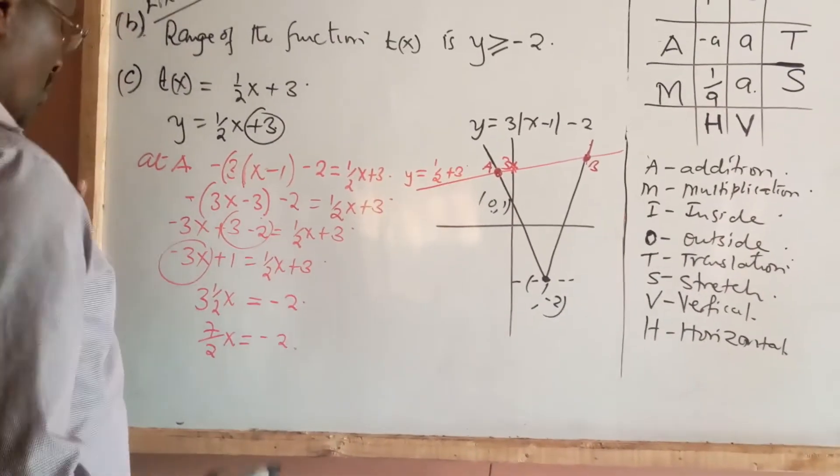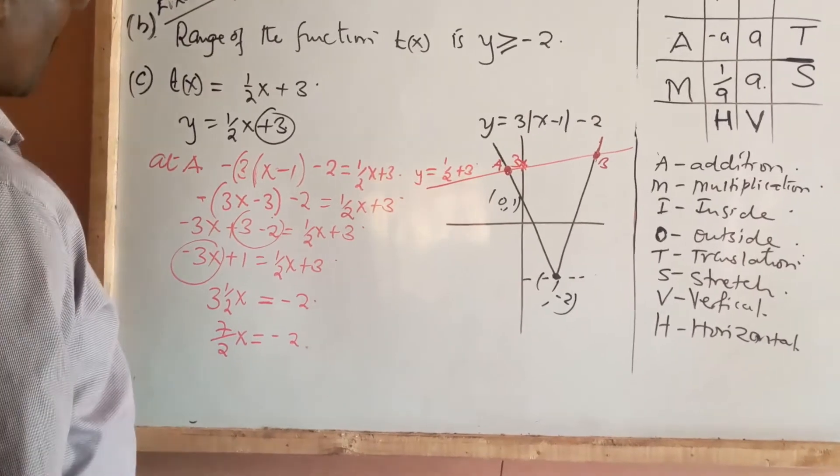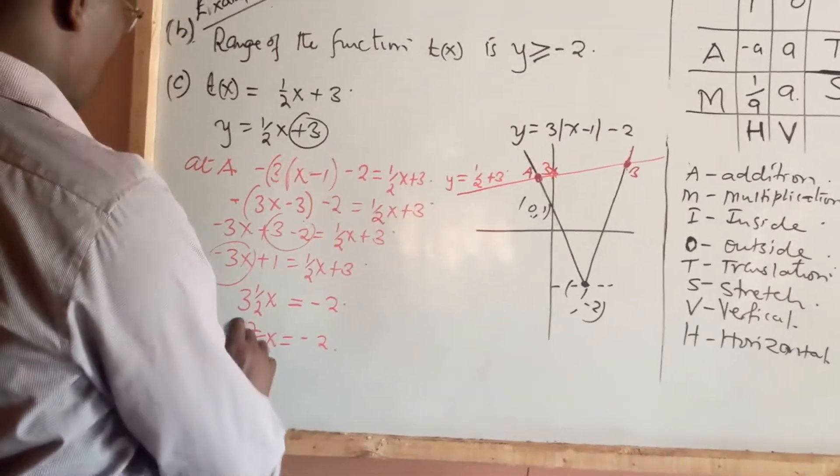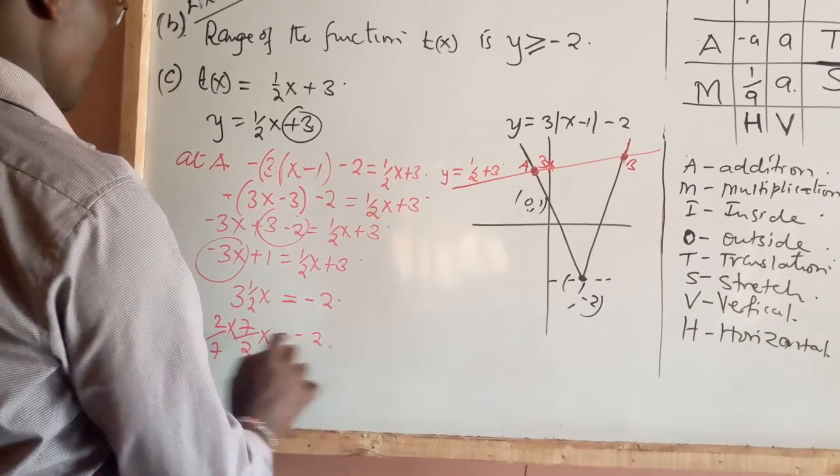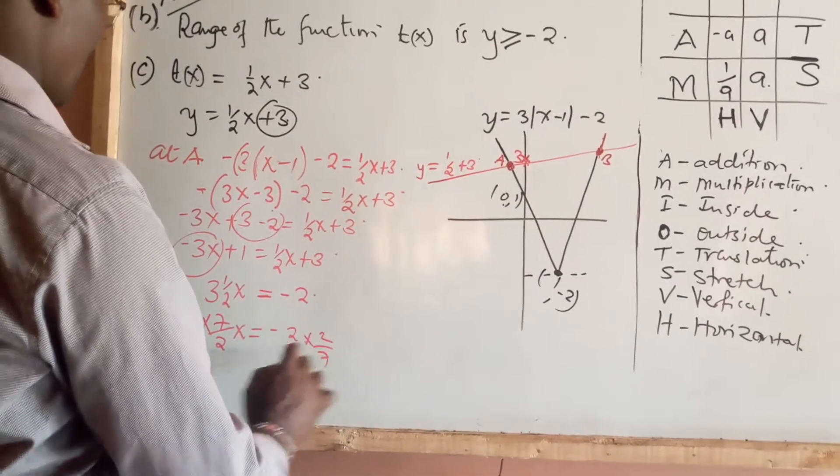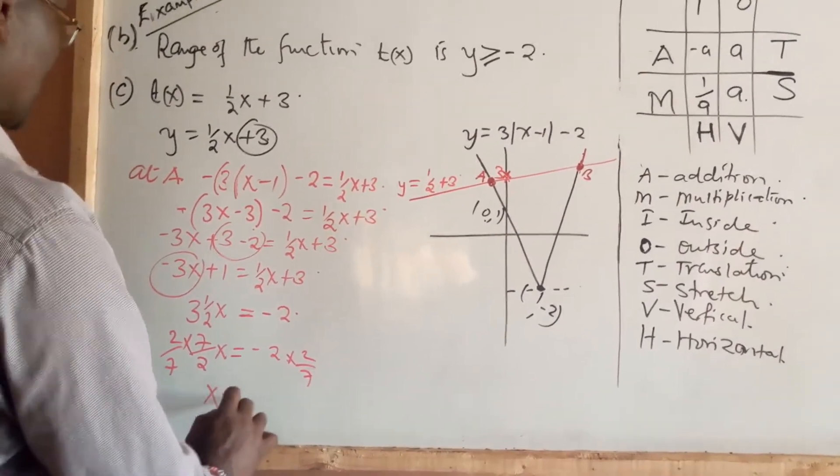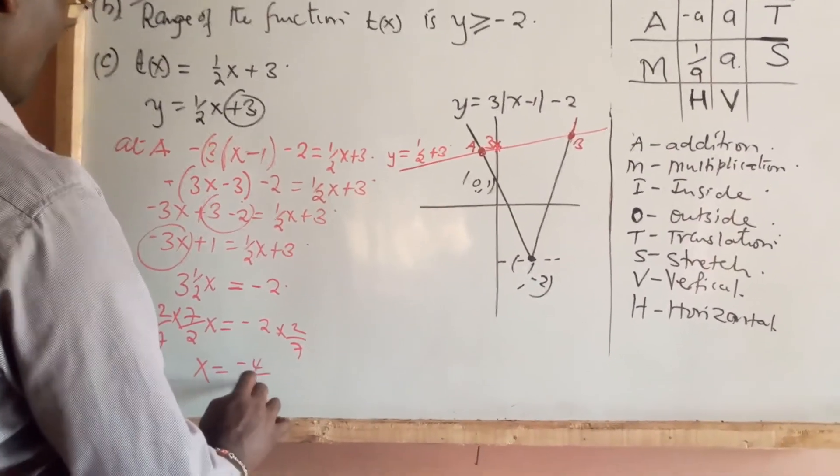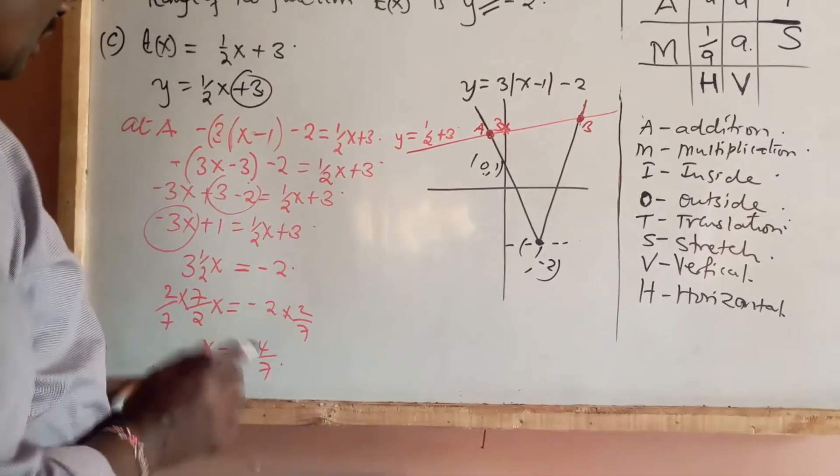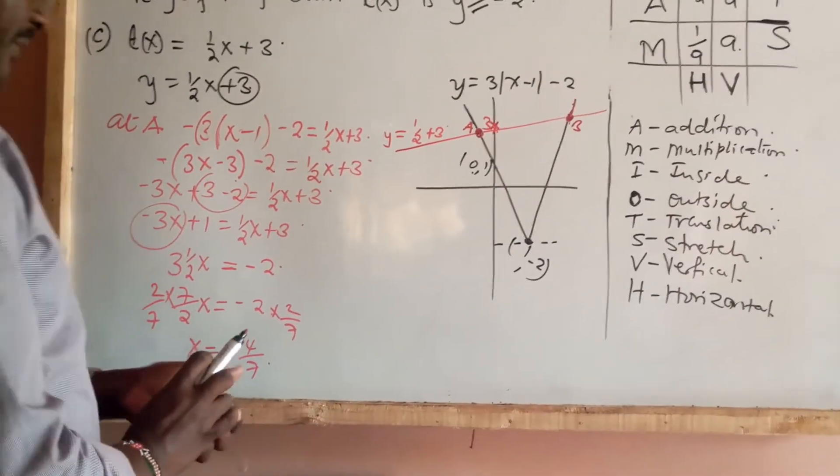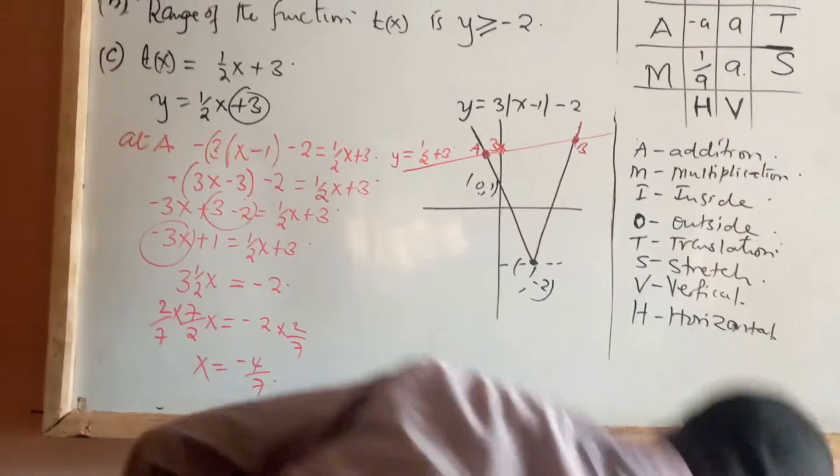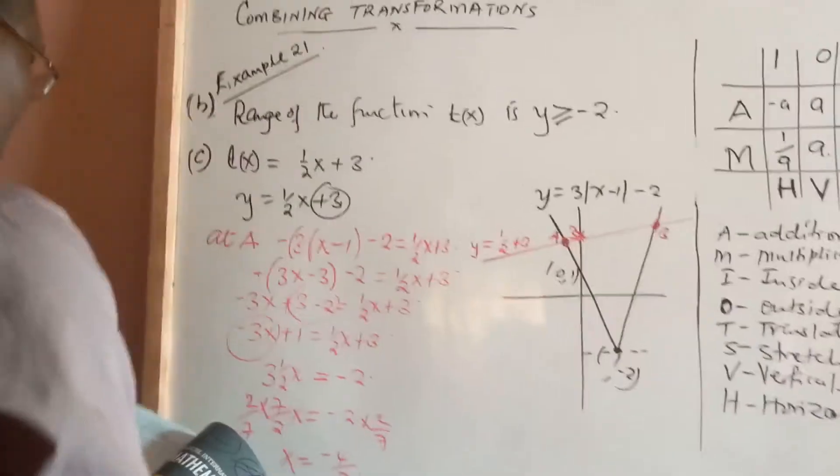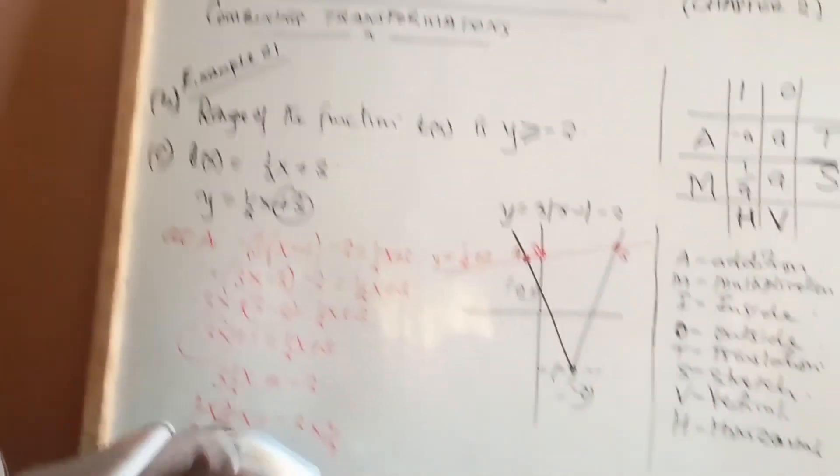So what do we do? To get the value of x. Of course, we multiply both sides by 2/7. And you realize that our x is -4/7. At that point, you may think that we have solved the equation. But we are not yet.